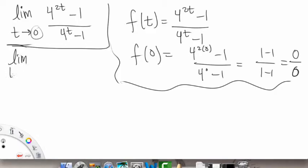So limit as t goes to 0. So we can actually factor the top, okay? Because this is basically like saying 4 to the t and then squared minus 1, okay? And 1 can always be squared. And then on the bottom we have our 4 to the t minus 1.